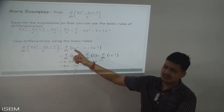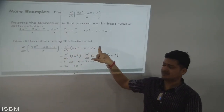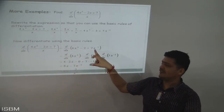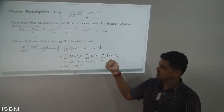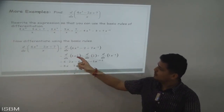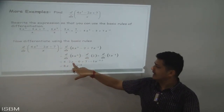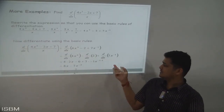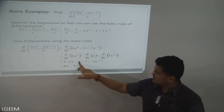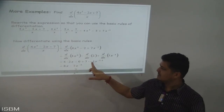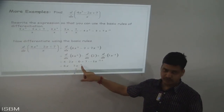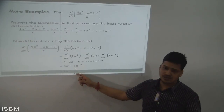Applying the power rule: d/dx of 4x² = 4·2·x^(2−1) = 8x. The d/dx of 2 is 0. For d/dx of 7x^(−1): 7·(−1)·x^(−1−1) = −7x^(−2). So the final answer is 8x + 0 − 7x^(−2), or 8x − 7/x².